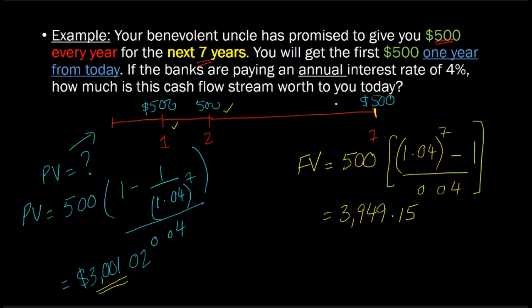Well, let's suppose that your uncle had, instead of giving you this cash flow stream, let's suppose your uncle said, look, I'm going to give you $3,001.02. And you'd be like, yeah, that's fine. That's totally fine because that's exactly how much these 500s are worth to me today. How did you factor that in?